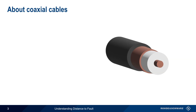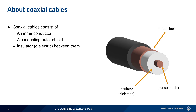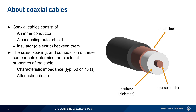We'll start with an overview of coaxial cables. Coaxial or coax cables consist of an inner conductor, a conducting outer shield or sheath, and an insulator or dielectric between these conductors. The sizes, spacing, and composition of these components determine the electrical properties of the cable, the most important being the cable's characteristic impedance, which is almost always either 50 ohms or, less often, 75 ohms. Other properties include its attenuation or loss per unit length, and its velocity factor, which expresses the speed at which signals travel through the cable as a fraction of the speed of light.